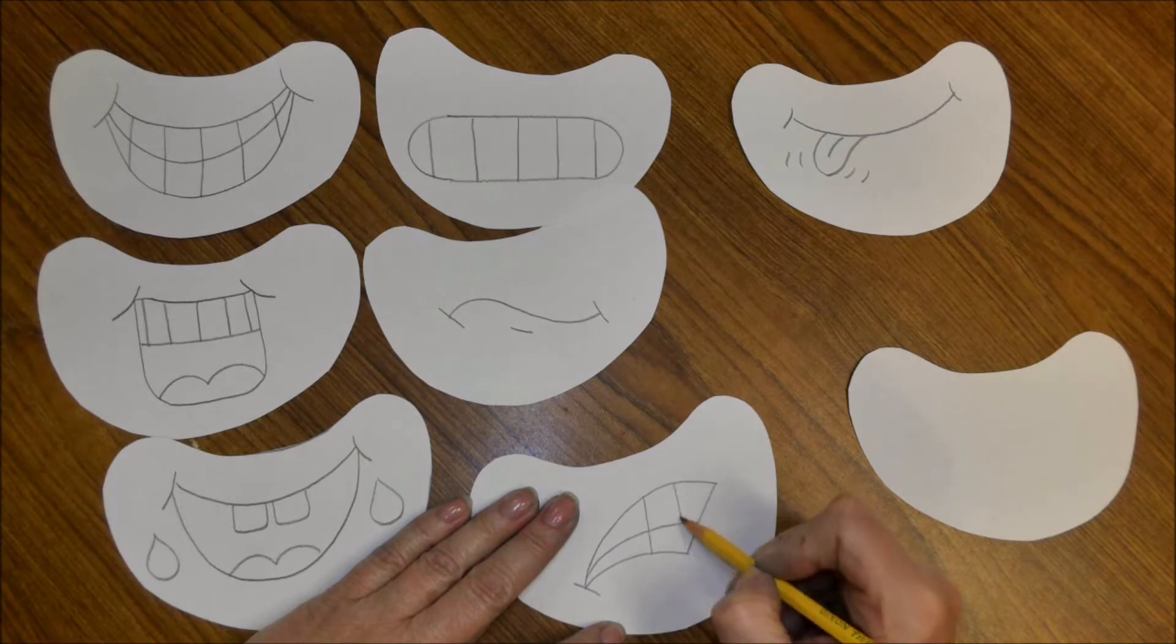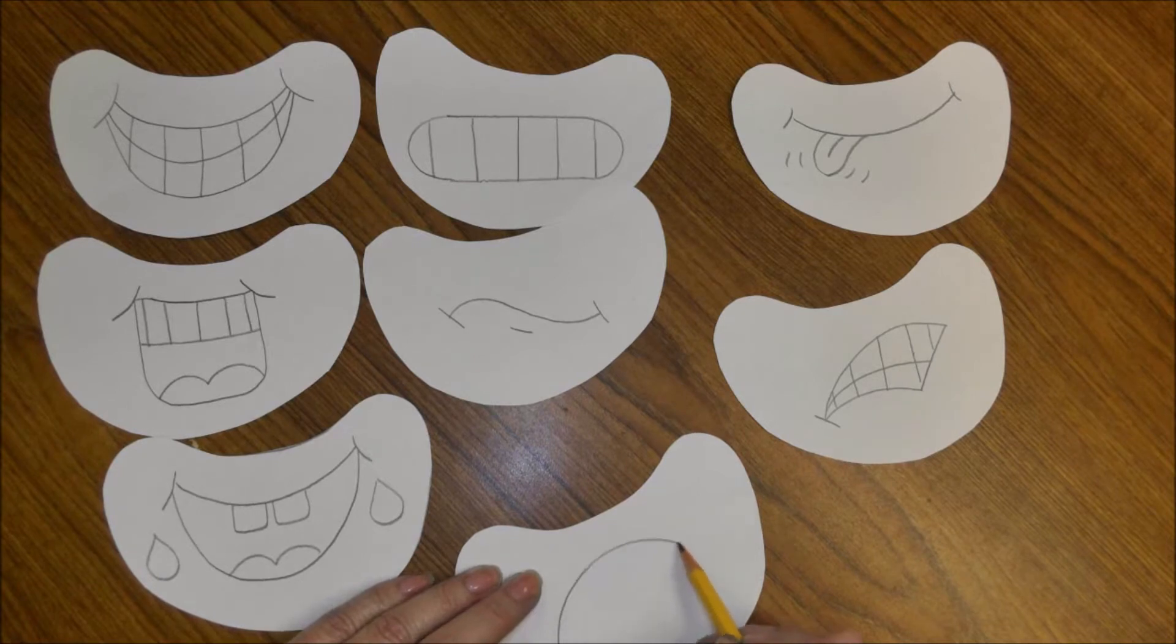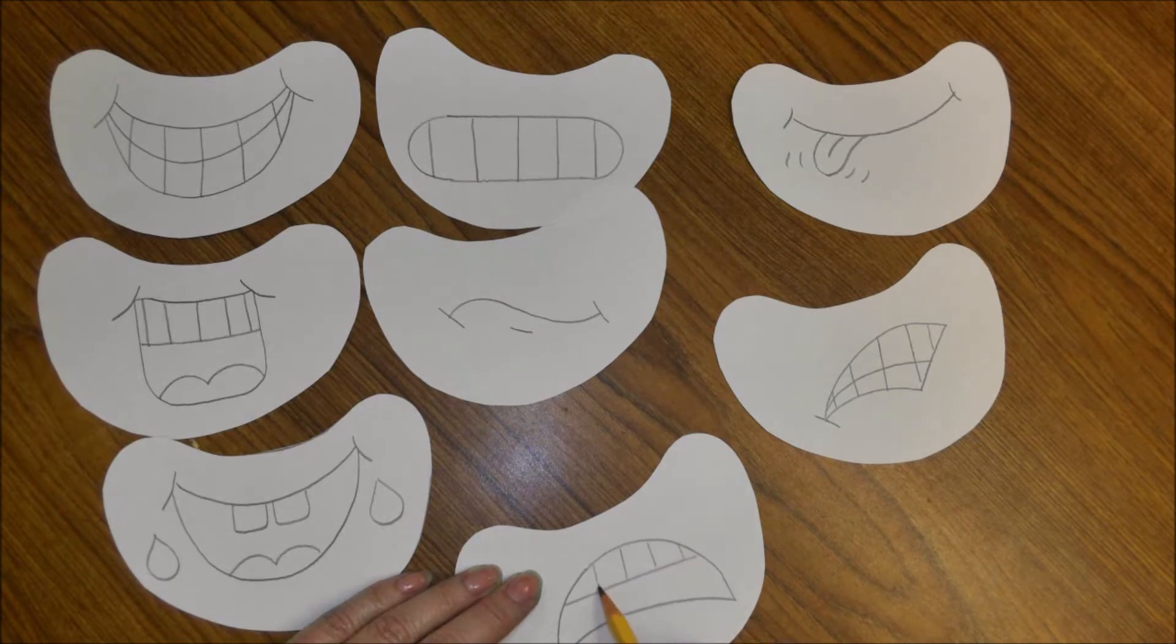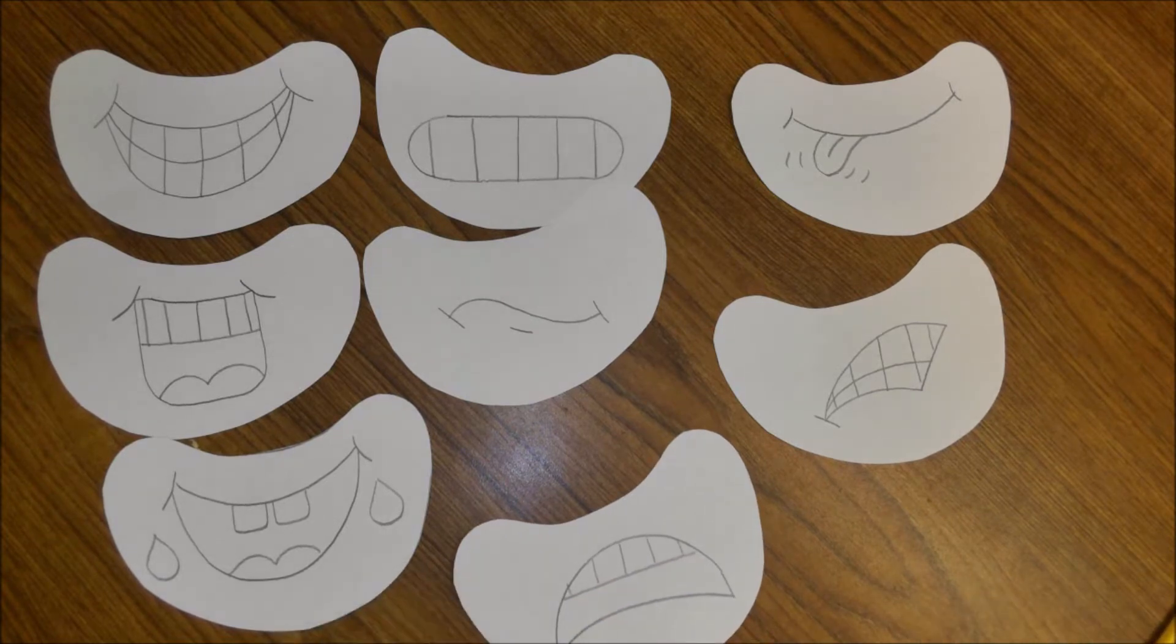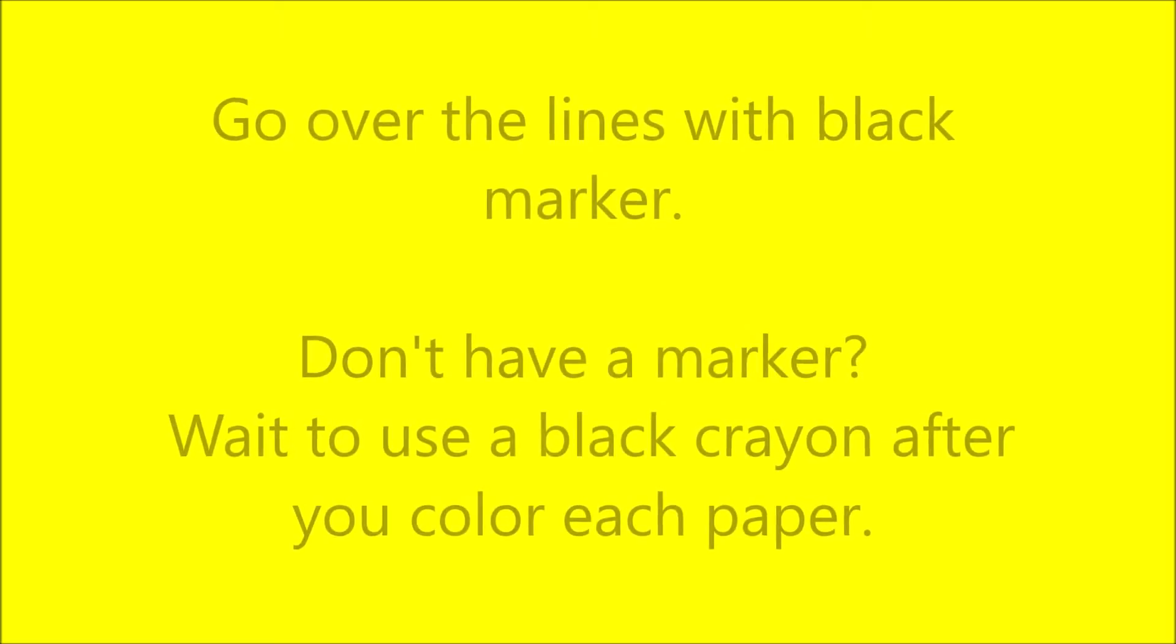Now for the sad emoji. Start with a rainbow, make a shorter rainbow connecting the two points, a line across, and then make some teeth marks on it. And then we're going to put a tear up in the corner.